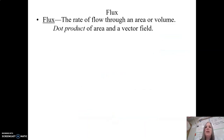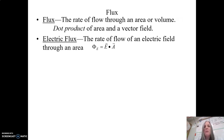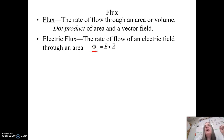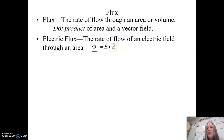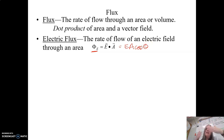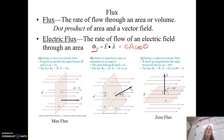Flux is the rate of flow through an area or volume. It is a dot product of the area and the electric field vector. Electric flux — the symbol is capital phi sub e — is the rate of flow of an electric field through an area. It is equal to the electric field times the area as a dot product, which we can also write as E·A·cosθ, where theta is the angle between the two vectors.